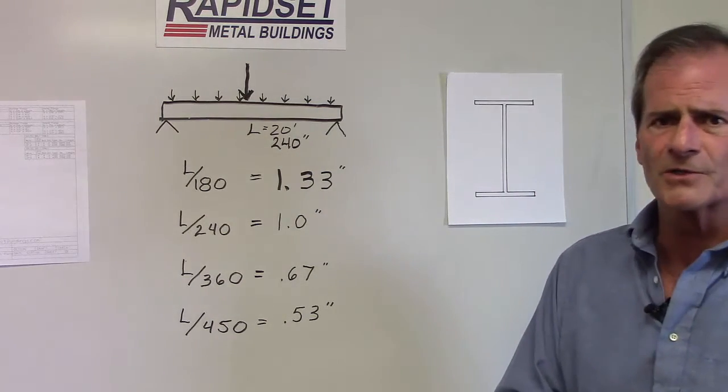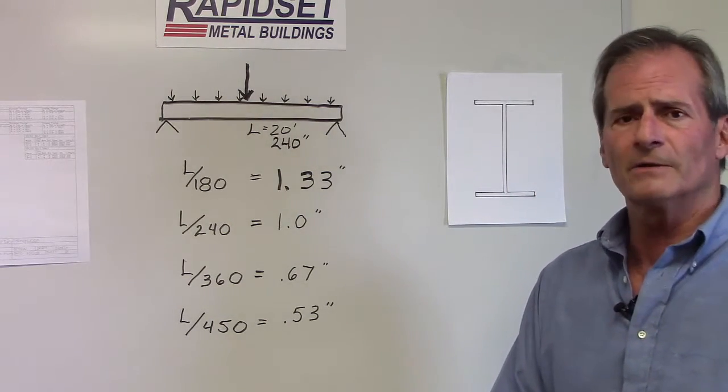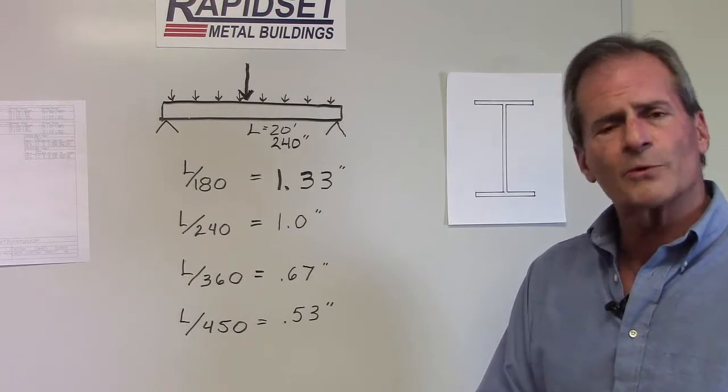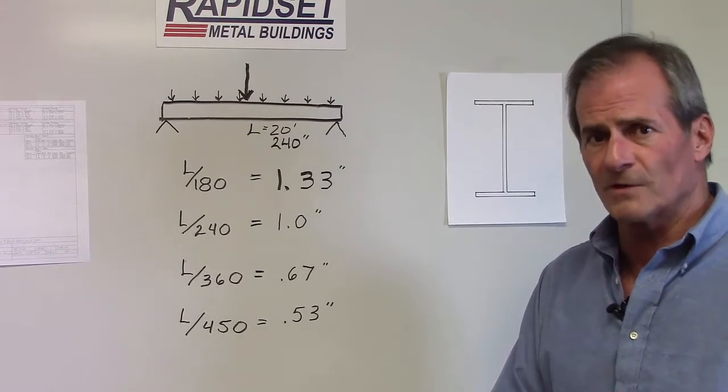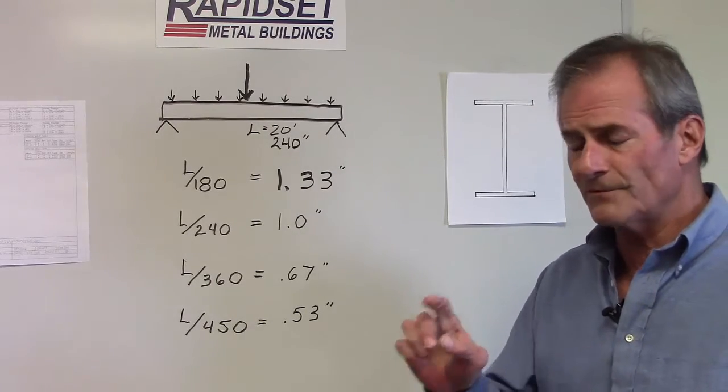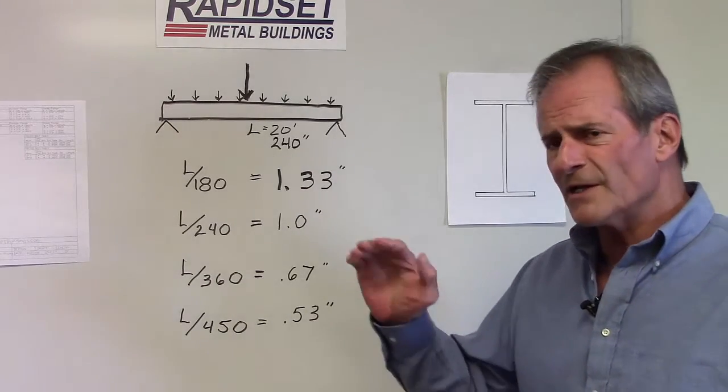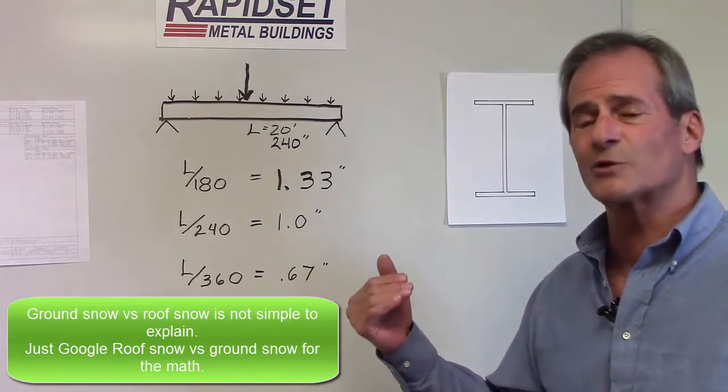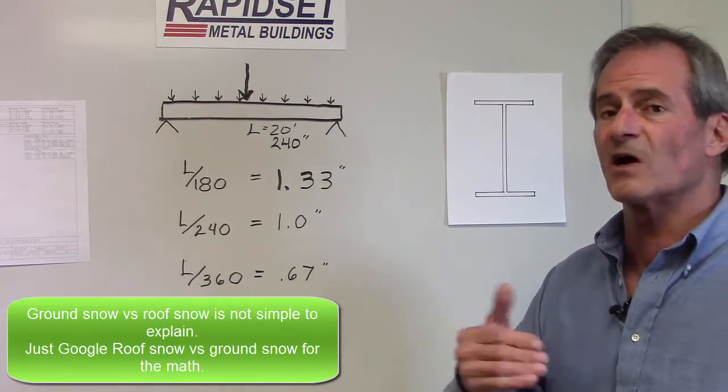A 30 pound snow load, a 1 pound collateral, a 2 pound dead. Well, we've got 33 pounds per square foot on that roof. Now, if you remember in codes and loads, that's provided that's a roof snow. If that's a ground snow, I've only got 21 pounds per square foot. I lost 9 pounds.